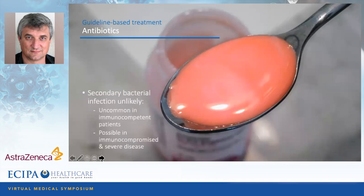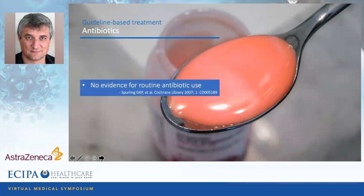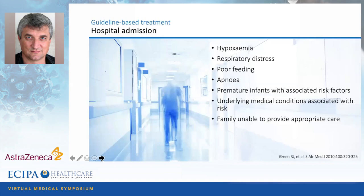Regarding antibiotics: with RSV virus infection, secondary bacterial infections are very unlikely and uncommon in immunocompetent patients. They may occur in immunocompromised patients or in severely sick patients needing ICU admission. There is no place for routine use of antibiotics — not even a short three-day course, because that drives resistance. A Cochrane Library review showed there is no evidence for routine antibiotic use in RSV bronchiolitis. The South African guideline states antibiotics should not be used in uncomplicated bronchiolitis, only for severe cases such as ventilated patients in the pediatric ICU.